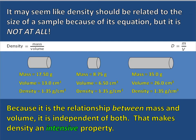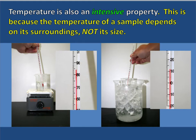Go ahead and write down that because the relationship between mass and volume means that density is independent of both. Another example of an intensive property is temperature — how hot or how cold something is. The temperature of a sample depends on its surroundings; it has nothing to do with its size. If it is someplace cold, the sample is going to be cold; if it is someplace warm, the sample is going to be warm. So temperature is an intensive property because it depends on its surroundings. You're taking down what is highlighted in yellow.